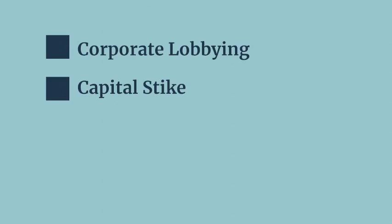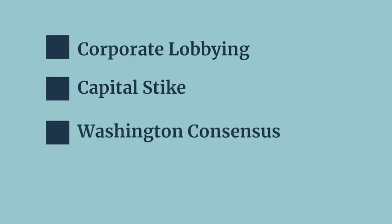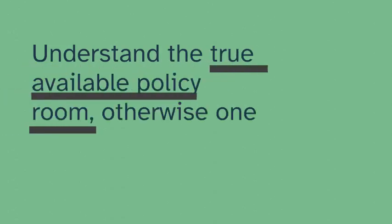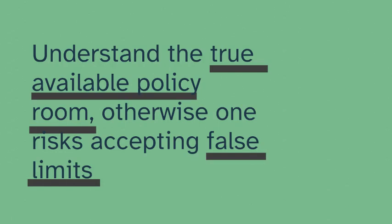There are a number of reasons for this. Corporate interests can form well-organised and funded lobby groups, and capital flight and other forms of capital strike can also be used as threats to discourage more progressive policy. International institutions often have considerable sway over domestic policy, through controlling conditions of access to government credit and international trade. But further than this, many people's livelihoods depend directly on these systems of production, even if in an exploitative and inequitable way. Overall, it can be very important to understand the various political motivations behind policy, and to understand the true available policy room. Otherwise, one risks accepting false limits. This is not to say that there are never situations where difficult decisions have to be made with scarce resources, but rather that these limits are often exaggerated.